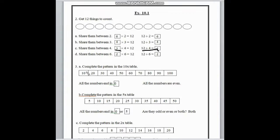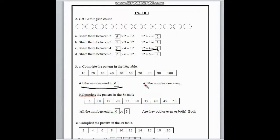In number 3, complete the pattern in the 10 times table. We have to complete this table by 10 multiplication. The 10 times table: 1 ten is 10, 2 tens are 20, 3 tens are 30, 4 tens are 40, 5 tens are 50. In this way, we have to complete this table. All the numbers end in 0, so we write that all the numbers end in 0. And all the numbers are even, so we write here even.